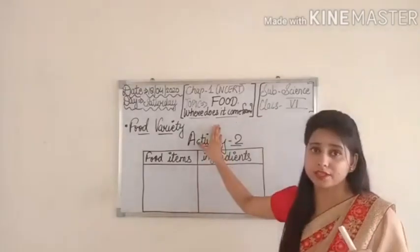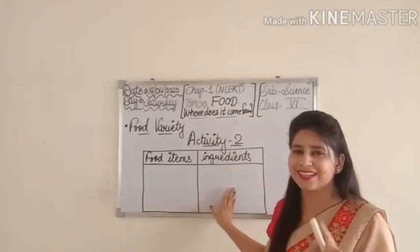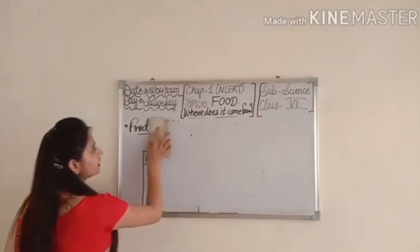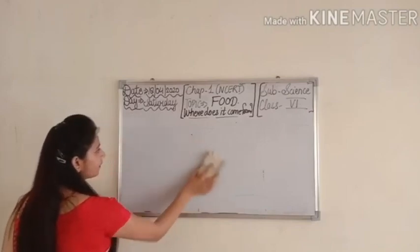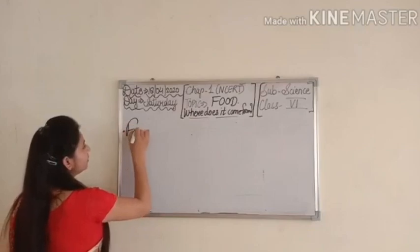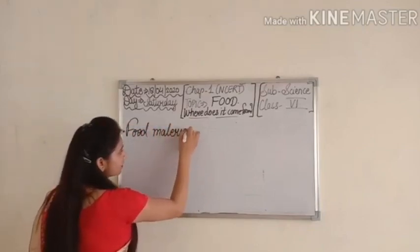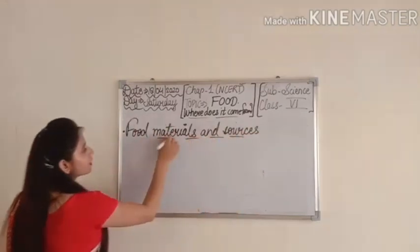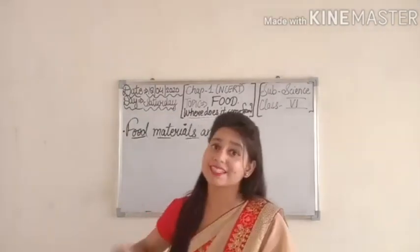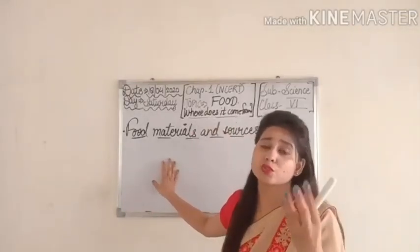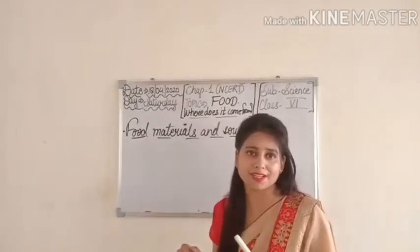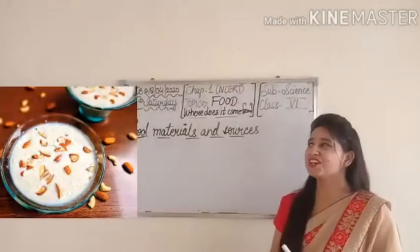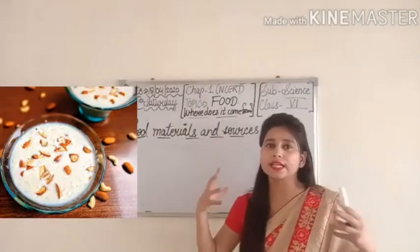You have to understand the chapter very thoroughly before doing these activities. Let's move to the next part: Food Materials and Sources. The food we eat — what are its sources, and where does it come from? Let's take the food item kheer as an example.